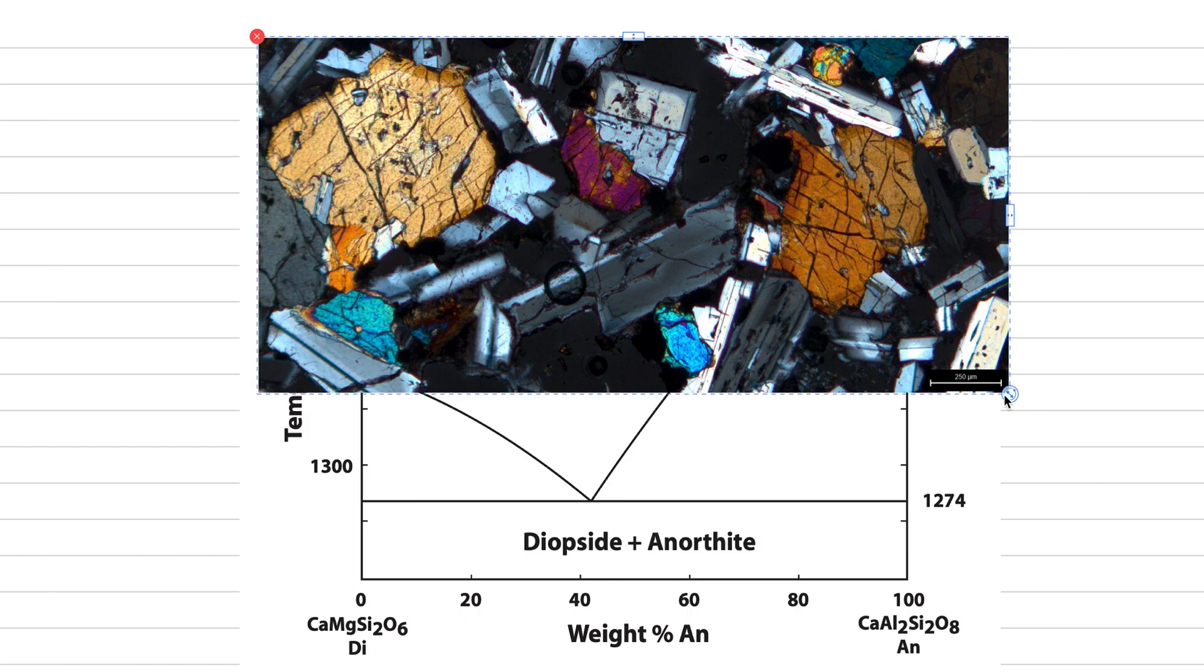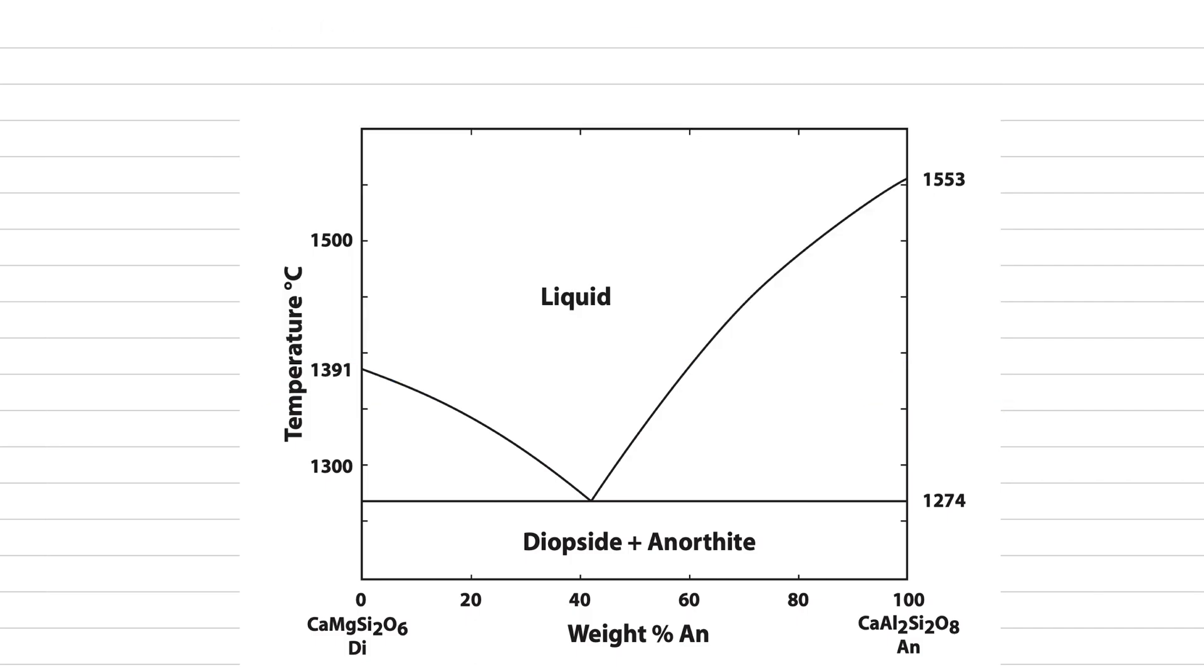We can explain the rock of clinopyroxene and plagioclase based on textures present, or we could use a set of thermodynamic mathematical models validated by experiments. Let's get rid of that picture and do our worked set. This is an example of a binary phase diagram of a basaltic composition melt.